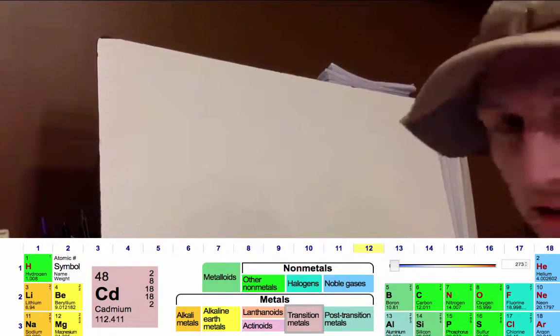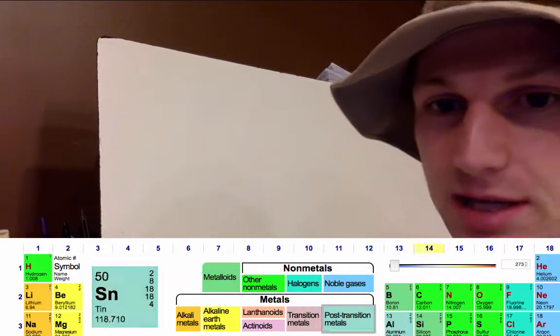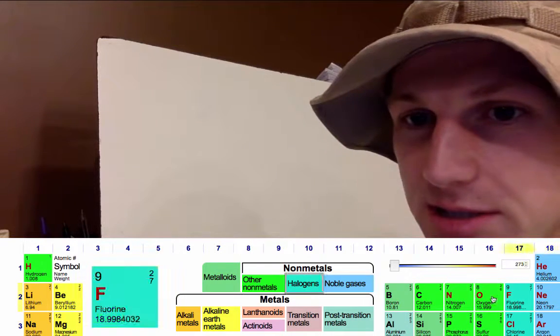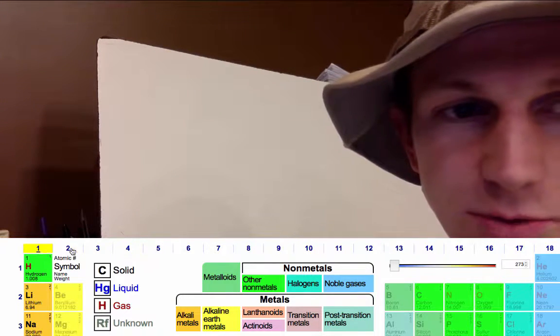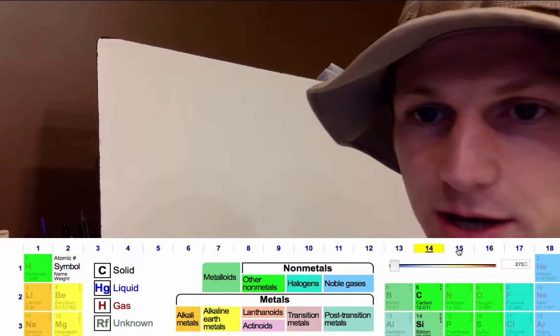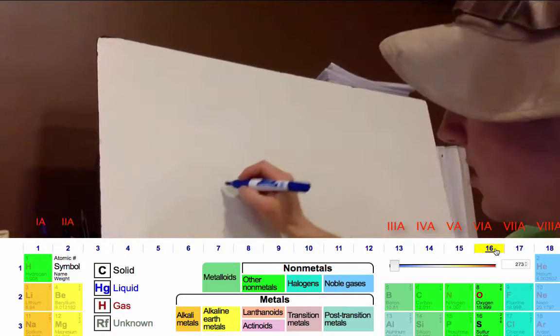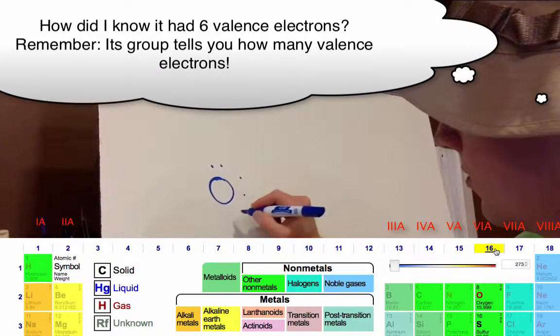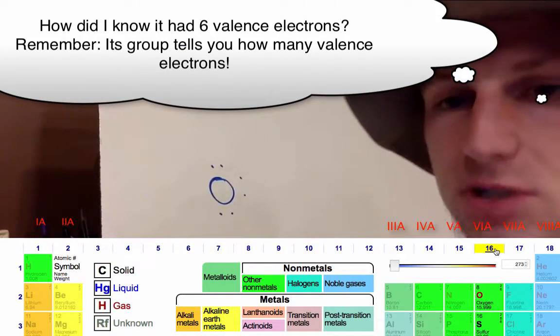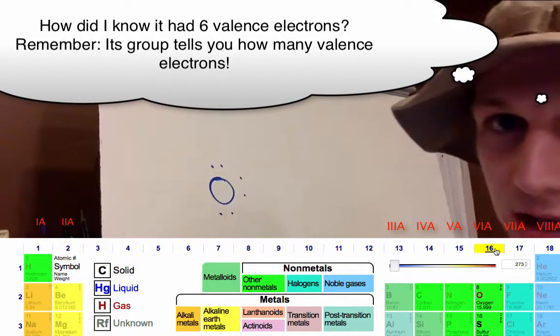When we talk about ions, we're going to take a look at our whiteboard again and do some Lewis dot structures. We've done these before. We're on ptable.com right now and I'm going to look at oxygen. Oxygen is in group 6a, so you draw the symbol for the Lewis dot structure: one, two, three, four, five, six.